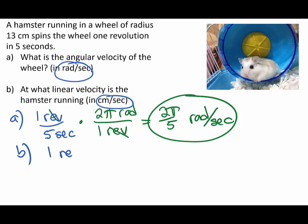Again, let's start with one revolution per five seconds. We're going to use a conversion fraction to take revolutions and get them into centimeters. If the wheel goes around one revolution, what is the distance or length that it goes around? That's 2πr, the circumference.